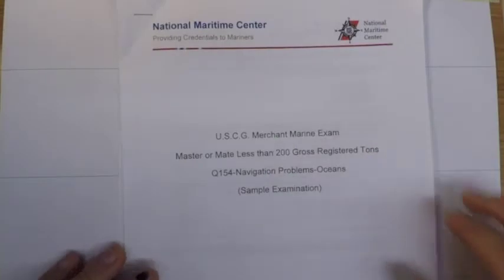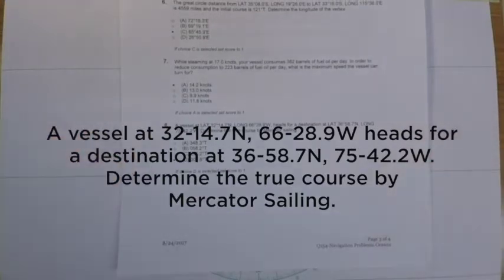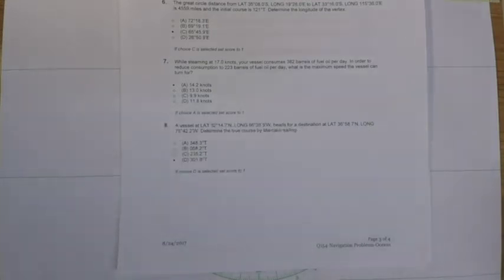Okay, welcome back to our video series for the 200-ton oceans navigation problems sample exam. We are now on problem number eight, which reads: a vessel at a certain latitude and longitude heads for a different position, determine the true course by Mercator sailing. So again, this is a sailings problem which can be found in Bowditch or in the Quarterman's guide to navigation problems.